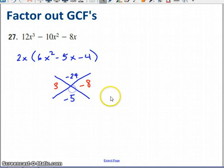At the bottom I'd put minus five. So the factors of minus 24 that add up to make minus five are three and negative eight.